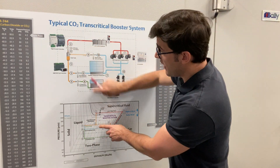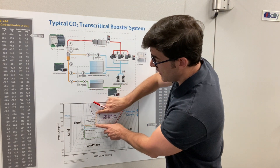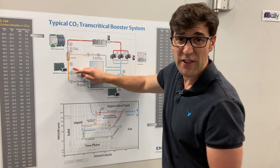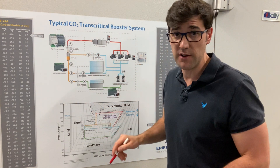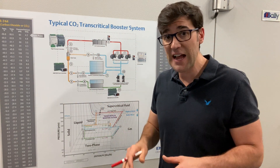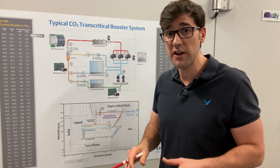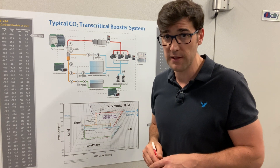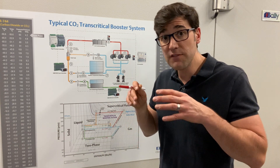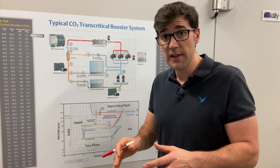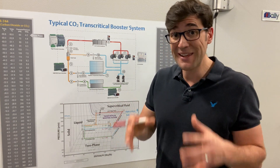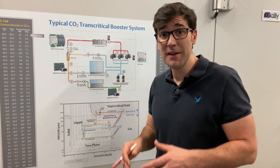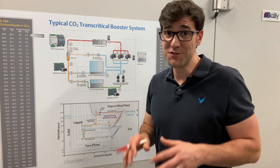Out of the high pressure valve, you go from three to four into what we call a flash tank receiver. This flash tank receiver is where we store the CO2 liquid, and that receiver feeds both the medium temp and the low temp evaporators.